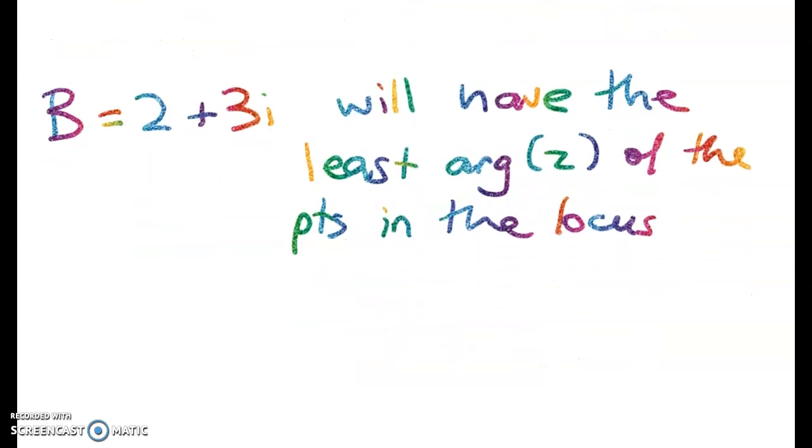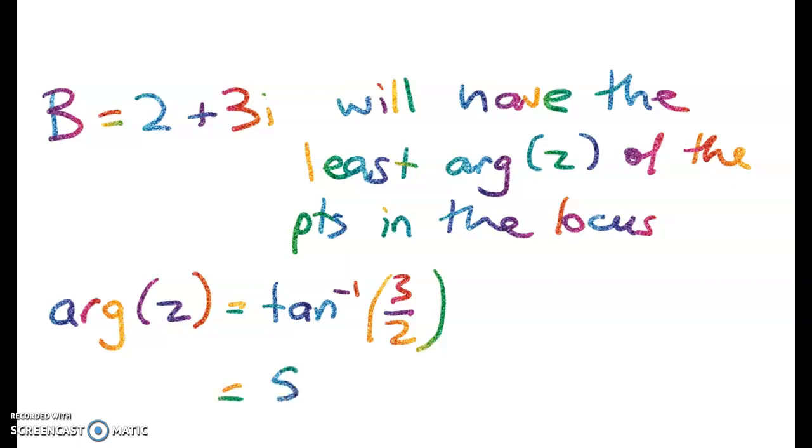Please don't stop watching I'm going to show you how to do this algebraically as well. Don't know if anyone's out there watching but maybe you are. So arg z is equal to tan inverse of 3 over 2. It's that simple because I'm in the first quadrant and that gives me my answer of 56.3 degrees.